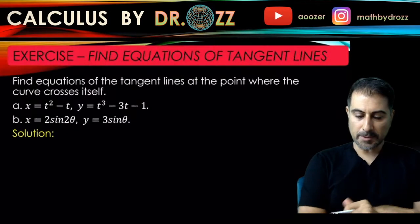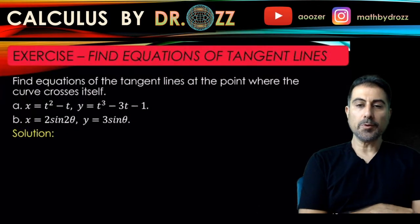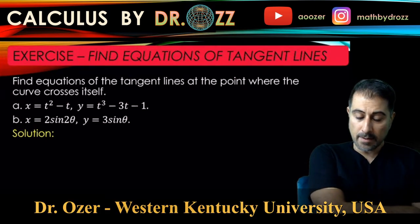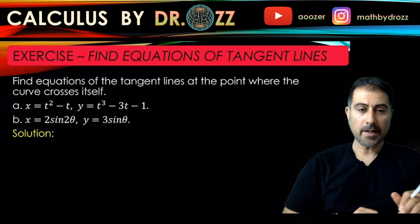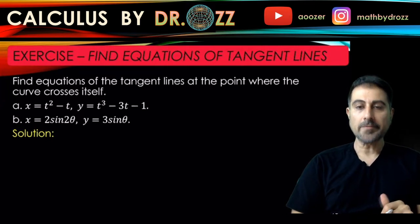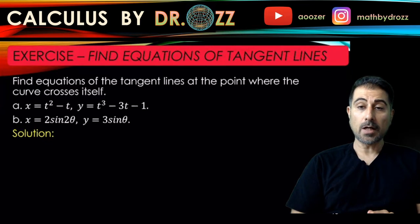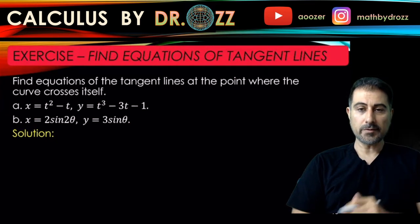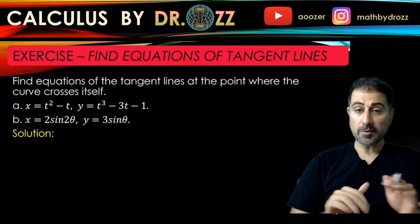Let's continue with part b. We have x equals 2 sine 2 theta and y equals 3 sine theta, and we're going to find again the self-intersection of the curve. Please go ahead and plot the parametric equations for part b and have your TI-84 with you.